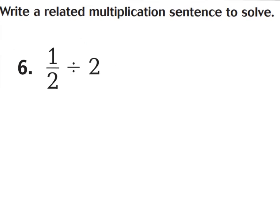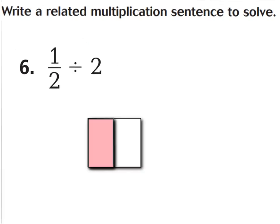For number six, we have one-half divided by two. Here's my model of one-half. Now if I wanted to divide my one-half into two parts, we would just make a horizontal line going across the middle of it. So now, one-half divided by two would equal how many parts? If I had half of a pizza and I divided it into two parts, how many parts will each person get? Each person should get one-fourth. Because I divided my one-half into two parts, just like it says here. So this would be the amount that each person would get — one-fourth.